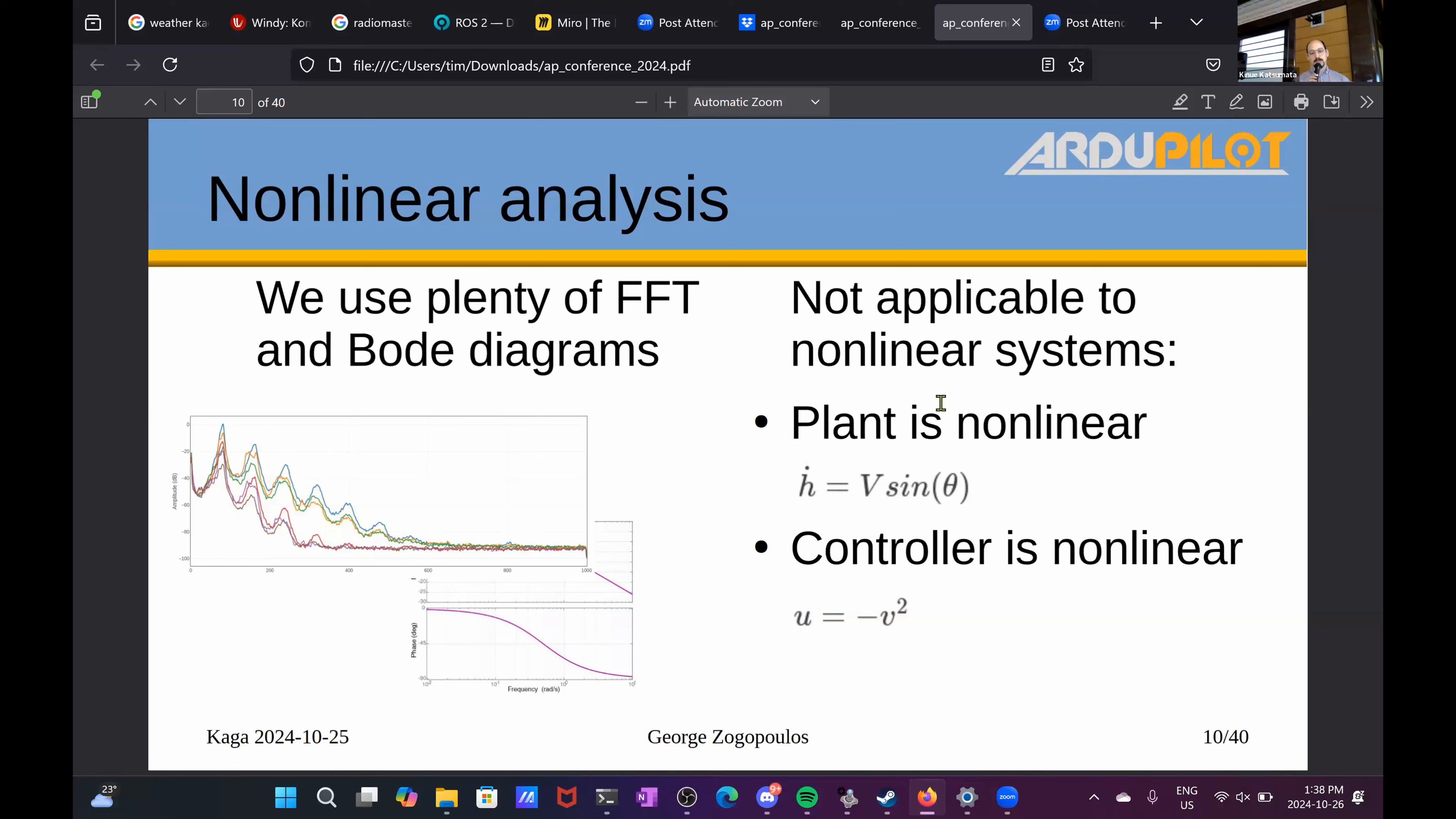So when does this linear assumption break down? It's either when the plant, the system is nonlinear, and I have here an example of the altitude rate as a function of velocity and pitch angle. And the other case when the linear assumption breaks down is when your controller is nonlinear. And you know what is hitting both of these? TECS.